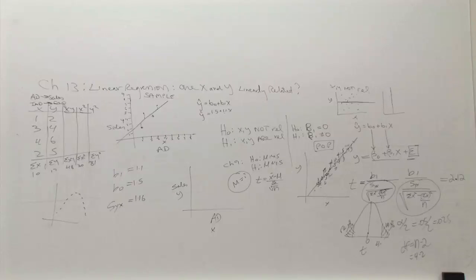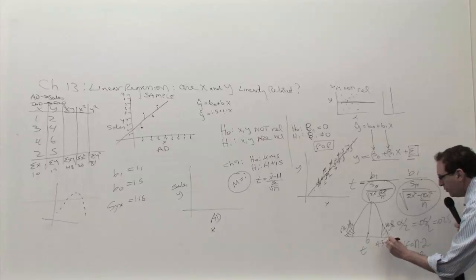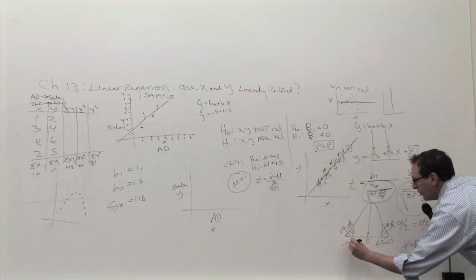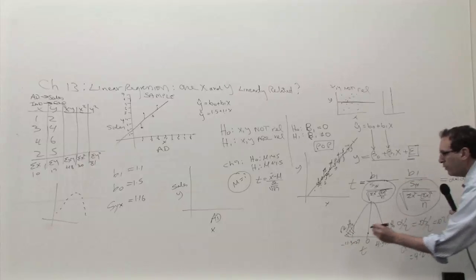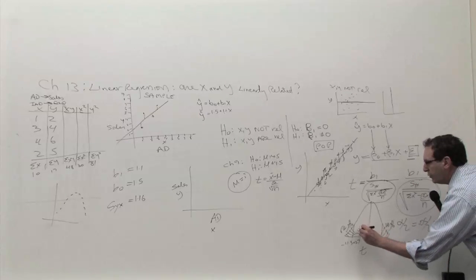4.3 something. Oh, 3. 3.3. 0.7. 3. Minus 4.3.07. 0.7. And, of course, I should have labeled this middle part. Do not reject H0.